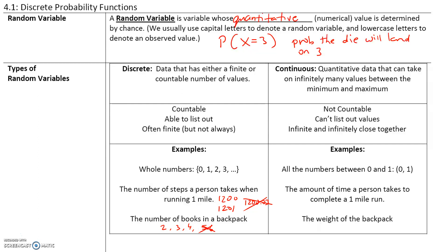On the other hand, a continuous random variable is quantitative data that can take on infinitely many values between the minimum and the maximum. This is not countable — you cannot list out the values, and they are infinite and infinitely close together. For example, all the numbers between 0 and 1: we have 0.01, 0.001, 0.0001, 0.00001, and that's just with the 0.01s. The same goes for 0.02, 0.03, and so on. There are an infinite number of values between 0 and 1, so these are continuous and not discrete.